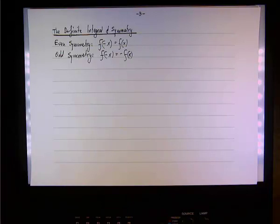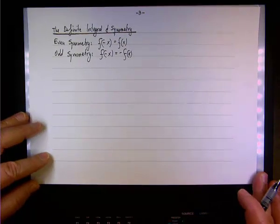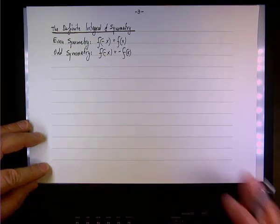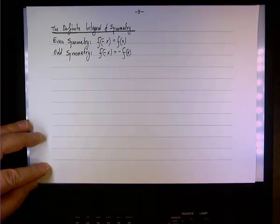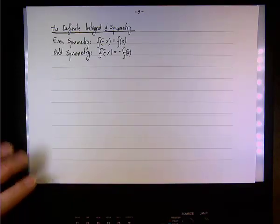Okay, and now we are looking at odd and even symmetry as they apply to the definite integral when you have the boundaries that go from negative b to positive b. So the boundaries are the same boundaries, but one is negative, the other is positive.